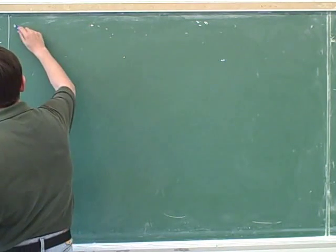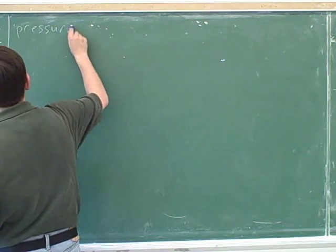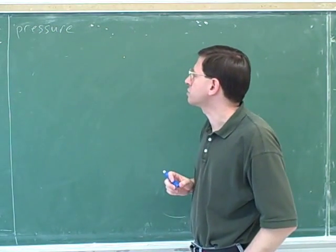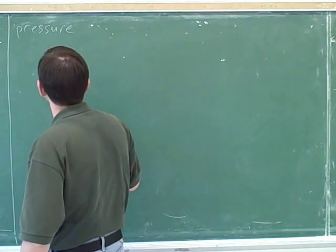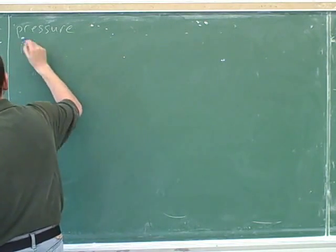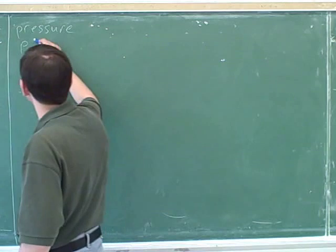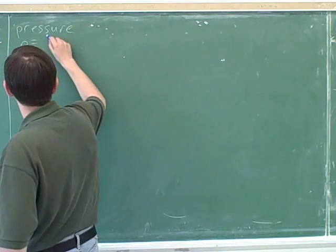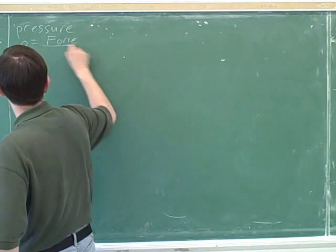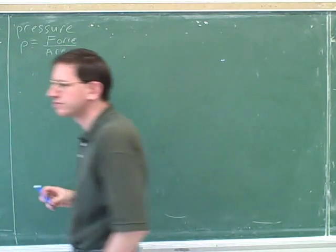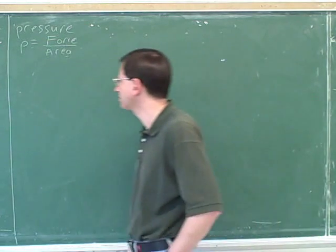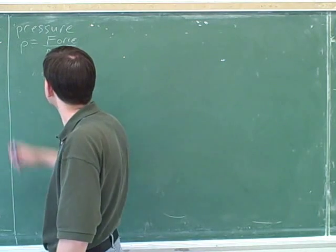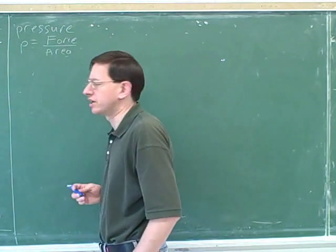Let's talk about the idea of pressure. As usual, we need to learn the key concepts. The symbol for pressure — your book uses lowercase p for pressure. It turns out that the formula for pressure is force over area. So we need to know what the units are for pressure.